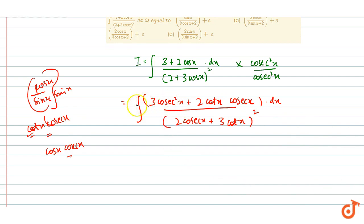Now if we take minus common from the numerator, we can write it like minus 3cosec²x - 2cosecx·cotx dx, upon (2cosecx + 3cotx)².